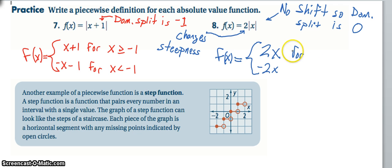Now again, my domain split is at zero, so this is going to be x greater than or equal to zero. And then my second function is going to be for the x less than zero.